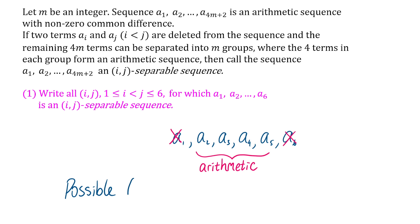Likewise, we could remove the last two terms, or we could remove the first and the last term and be left with the four terms in the middle. So the possible values of (i,j) for part one are (1,2), (5,6), or (1,6).